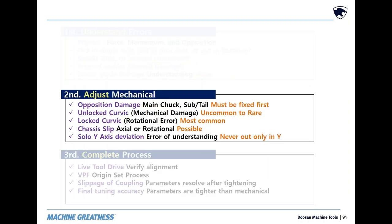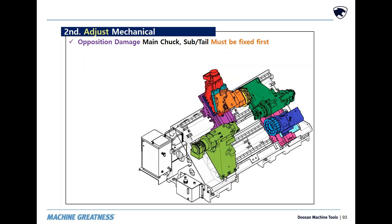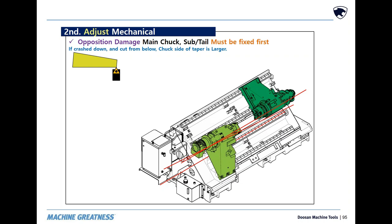Next is the repair process. Whatever you hit needs to bend, move, or break. Main, sub, or tail, it's going to move. And spindles will cut as tapers and act differently when cut from above or below.